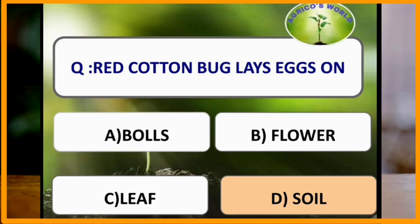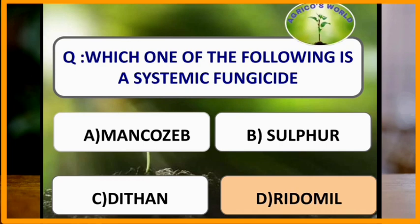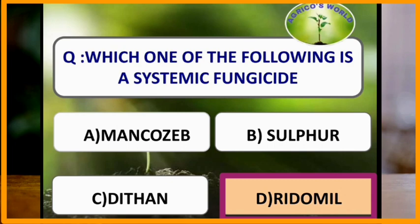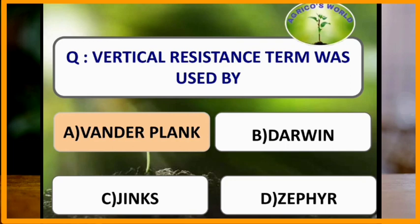Ridomil is a systemic fungicide. The water solubility of the fungicide makes it systemic in nature. The transmission of systemic fungicides in the plant body takes place through xylem vessels only. The term 'vertical resistance' was used by which scientist?